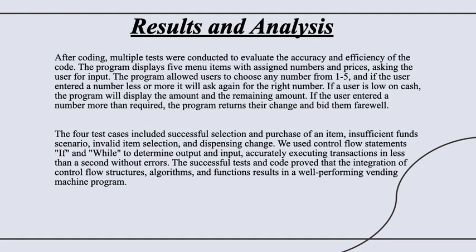After we were done with our code, we ran multiple tests to evaluate the accuracy and efficiency of our vending machine. When you start the program, it will greet the user then present the five snacks that the vending machine has. Each snack has an assigned number and price. The program will ask the user to choose the snack according to the number. If a user chooses a number that's not on the menu, the program will keep asking until the user does so. You choose however many of the item you want, but the code will ask you to give the required amount — otherwise it will return your change or keep asking until fully paid. We ran four tests covering the insufficient funds scenario, successful selection and purchasing of different items, invalid item selection, and the accuracy of dispensing change.